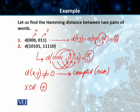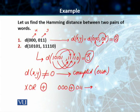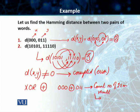What we have essentially done is we have performed an exclusive OR between — in the first example — 0,0,0 and 0,1,1. After that, we have just counted the number of 1s in the result. Whatever result comes in, we just count the number of 1s in the result, and that will give you the Hamming distance. In this particular example, this was 2.